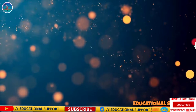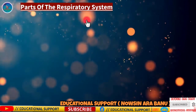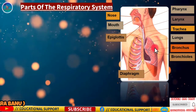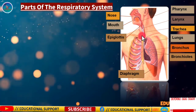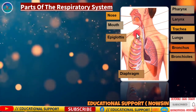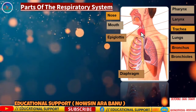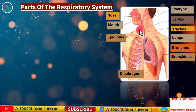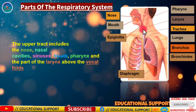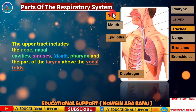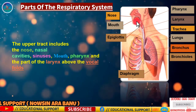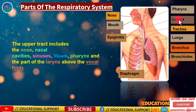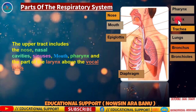In humans and other mammals, the anatomy of a typical respiratory system is the respiratory tract. The tract is divided into an upper and lower respiratory tract. The upper respiratory system consists of the nose, nasal cavity, sinuses, mouth, pharynx, and the part above the larynx of the vocal fold.